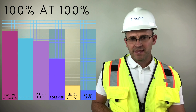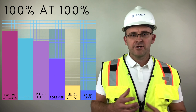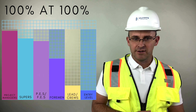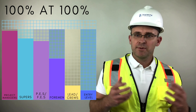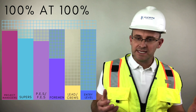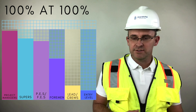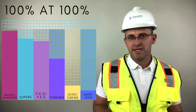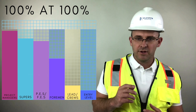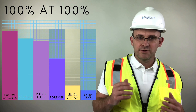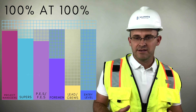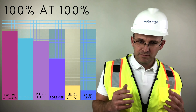To anchor this home: how much of the plan does everybody on the site actually understand? By percentage — how much does the PM understand? The superintendent? The PEs, the foremen, the lead persons, the crews, and anyone entry-level on site? If those numbers, as you see in the graph, are low, it is our job to increase the percentage of understanding at every single level and every position on the project.